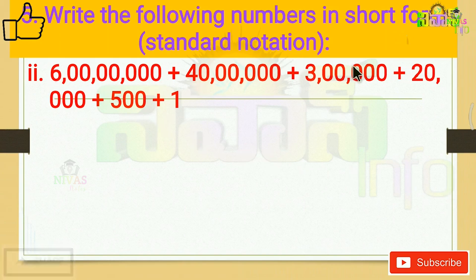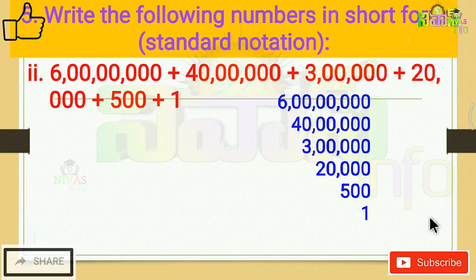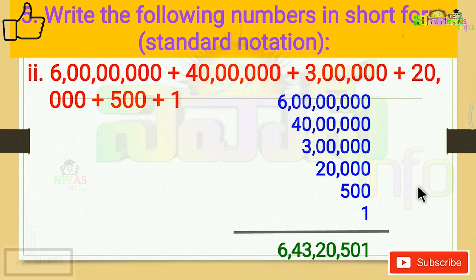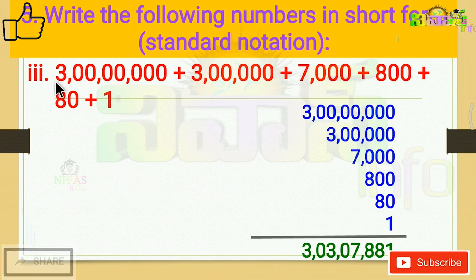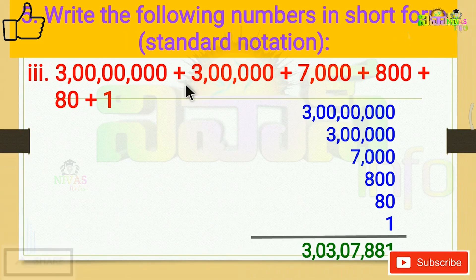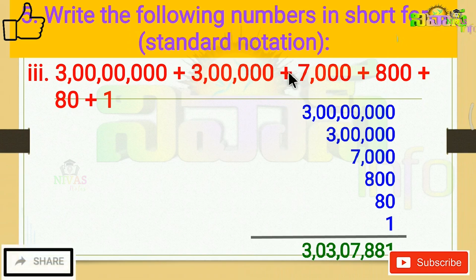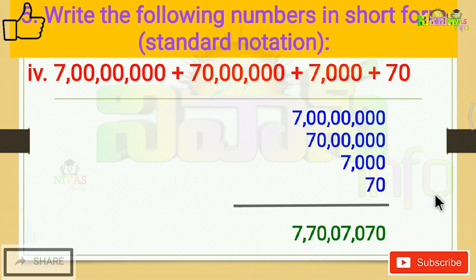Next problem: 40 lakhs plus 3 lakhs plus 20,000 plus 500 plus 1 gives 43,20,501. The third problem involves 30,07,881 — note that the ten-thousands place is 0 and the thousands place is 7.